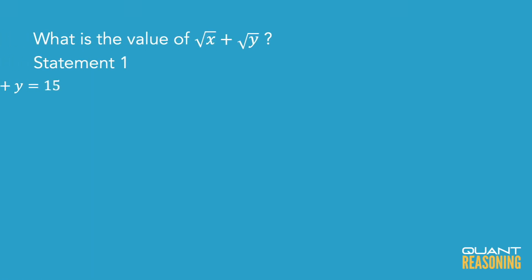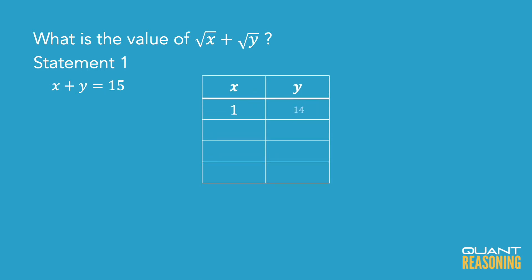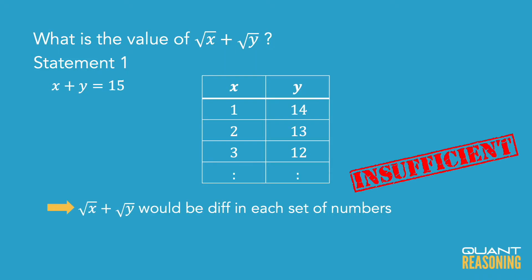Statement 1 tells us that the sum of x and y is 15. But remember, we know that they're positive integers, so they could be 1 and 14, 2 and 13, 3 and 12, and so on. But each of those cases would lead to a different sum of roots — the sum of root 1 plus root 14 is not the same as the sum of root 7 plus root 8. So statement 1 is not sufficient on its own.